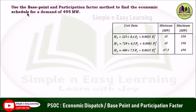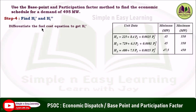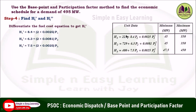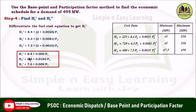Part 2: Use the base point and participation factor method to calculate the economic schedule for a demand of 495 megawatt. We need to find h_i' and h_i''. Differentiate the fuel cost equation to get h_i'. For unit 1, the constant 225 differentiates to 0, 8.4·P1 differentiates to 8.4, and 0.0025·P1² differentiates to 2×0.0025·P1 = 0.005·P1. So h1' = 8.4 + 0.005·P1. Similarly h2' and h3' follow the same pattern.